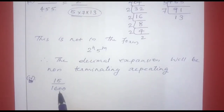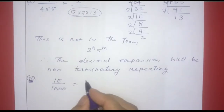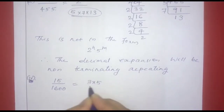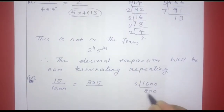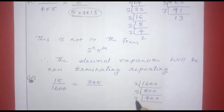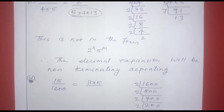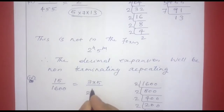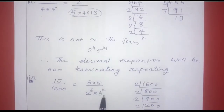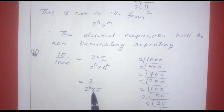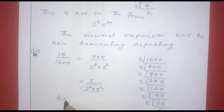The next question is 15 by 1600. The prime factor of 15 is 3 into 5. The denominator 1600 equals 2 raised to 6 into 5 raised to 2. So the denominator is of the form 2 raised to n into 5 raised to m. Therefore, the decimal expansion is terminating.